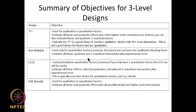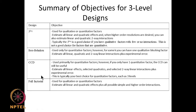CCD has the advantage of looking at almost 5 different levels because we have star points at ±α unlike other designs. We can estimate linear effects, quadratic effects, and two-way linear interactions. The full factorial 3^k gives a large number of experiments; it can be used for qualitative or quantitative factors, and we can estimate linear, quadratic, and all types of interactions — two-way, three-way and so on.